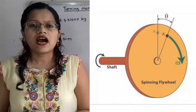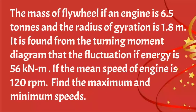So first, I will read what is the given problem. The mass of flywheel of an engine is 6.5 tons and the radius of gyration is 1.8 meters. It is found from the turning moment diagram that the fluctuation of energy is 56 kilonewton meter. If the mean speed of the engine is 120 rpm, find the maximum and minimum speeds.